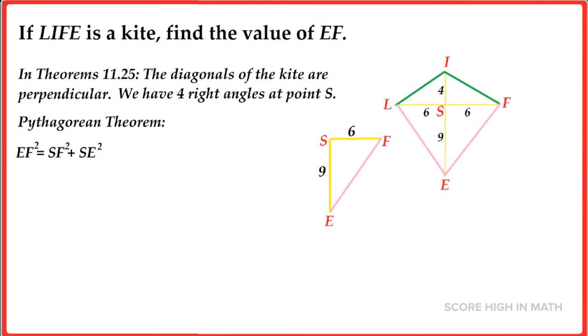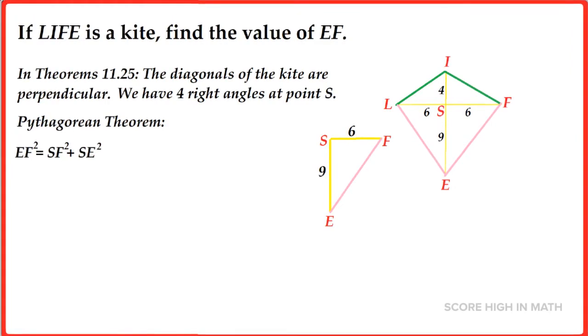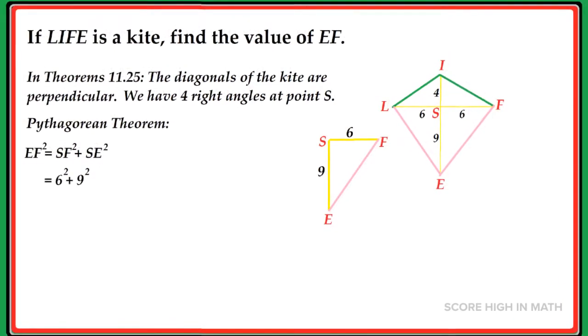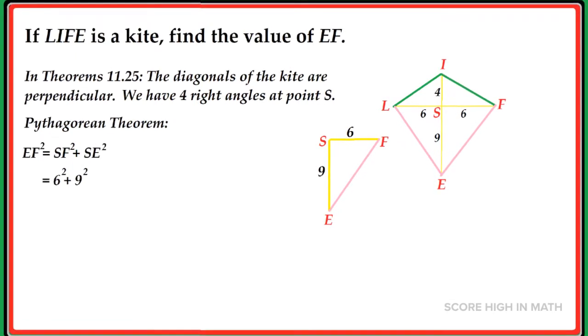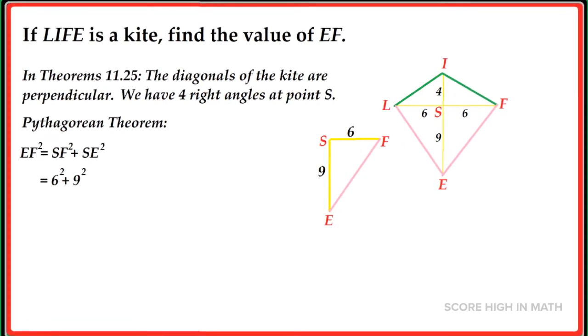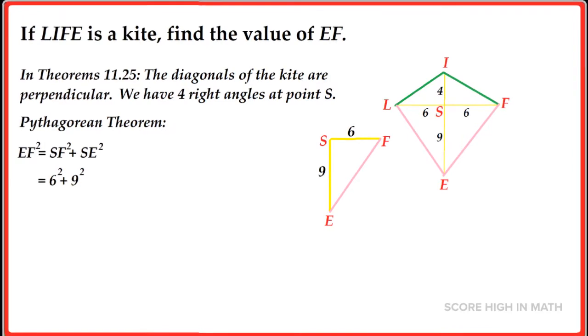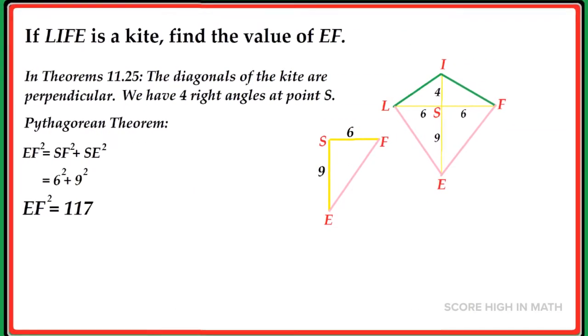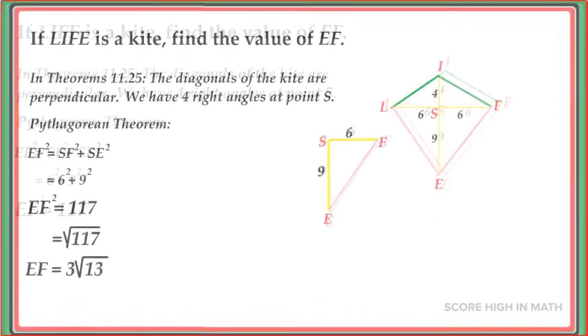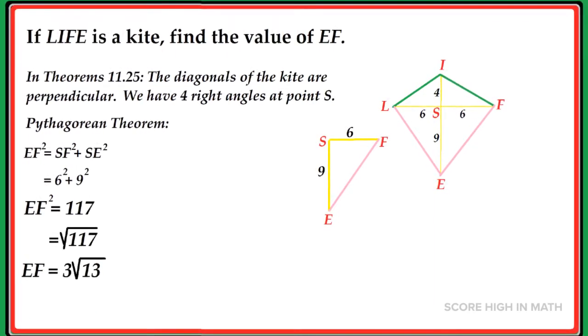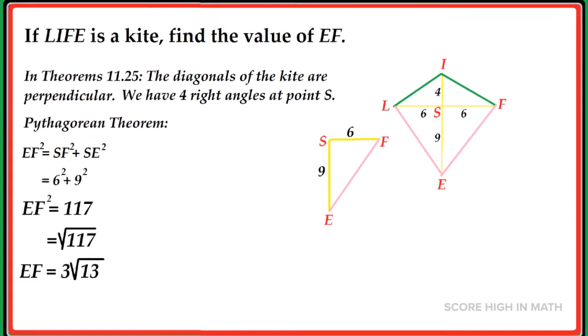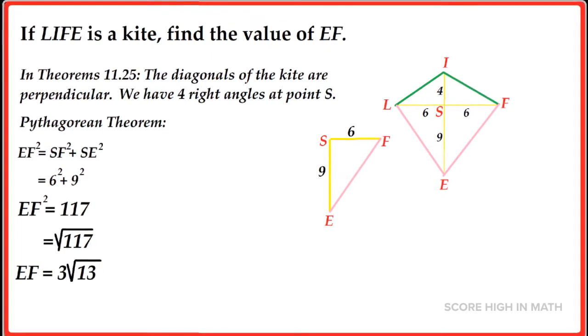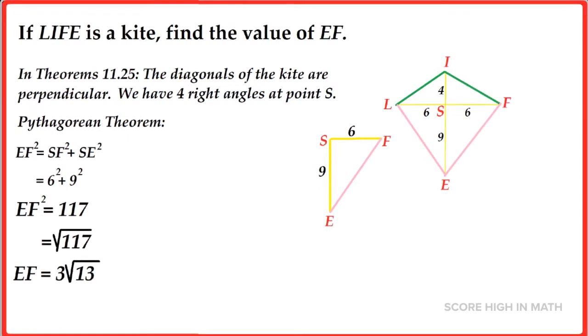So EF squared is equal to SF squared plus SE squared. Substituting the values in the Pythagorean theorem, it will give us 6 squared plus 9 squared, that is EF squared, and it will give us 117. To find the value of line segment EF, we are going to get the square root of 117, and it will give us 3 square root of 13.